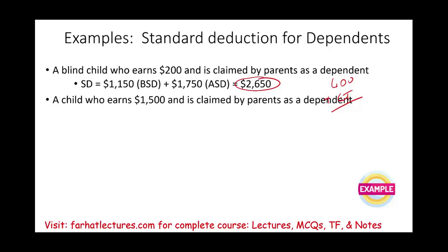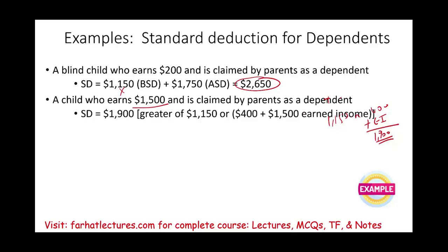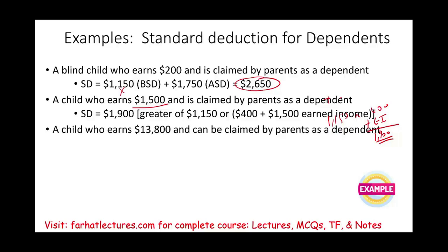Let's assume a child earns $1,500 and is claimed by their parents as a dependent. They don't want to use just $1,150. Their standard deduction is the greater of $1,150 or $400 plus earned income. $400 plus $1,500 is $1,900. Therefore, their standard deduction is $1,900.